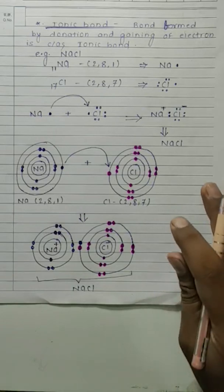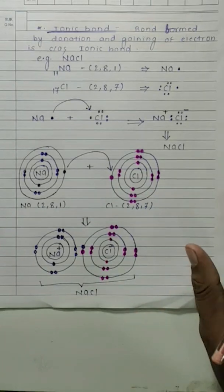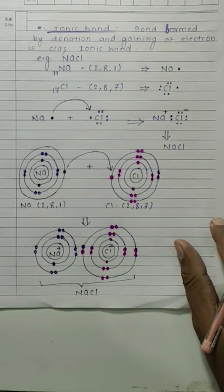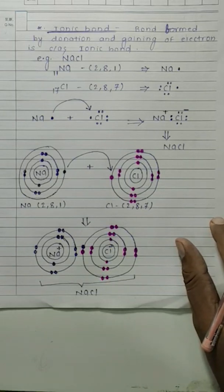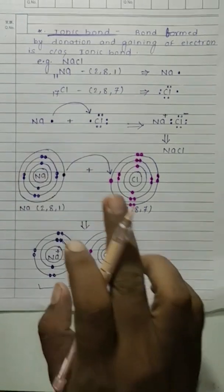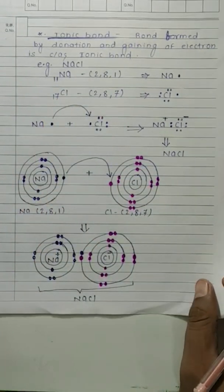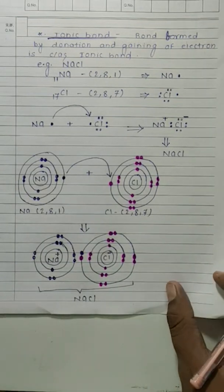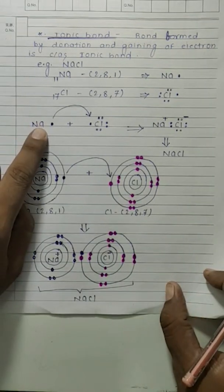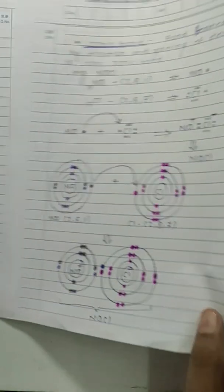I know this topic of bonding doesn't come through easily in a video and feels a bit boring — don't worry, in class we will take many examples and complete it properly. Still, remember: bond formed by donation and gaining of electron is called ionic bond. Sodium chloride example: sodium donated, chlorine gained.